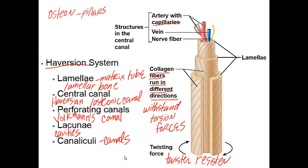The canaliculi form when osteoblasts secrete bone matrix that surrounds blood vessels while maintaining contact with one another. The osteocytes then project spider extensions into these canaliculi. The canaliculi are filled with tissue fluid containing osteocyte extensions, tying all osteocytes in a mature osteon together — essentially canals for communication.